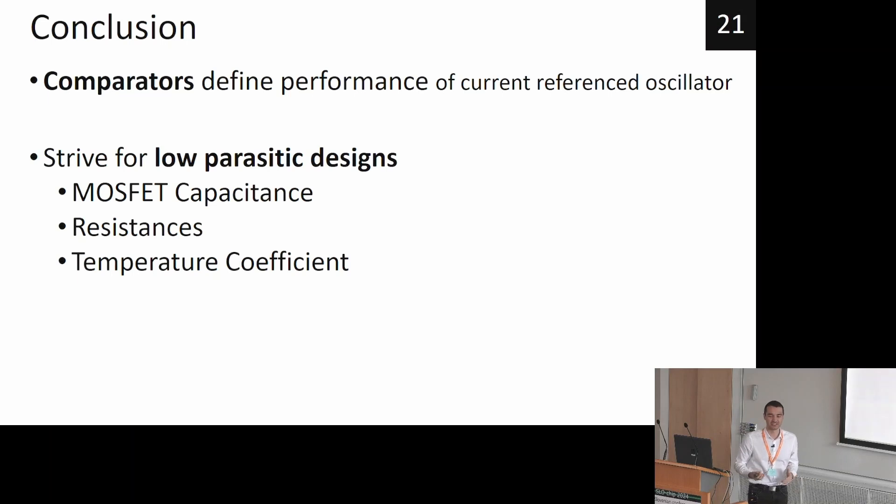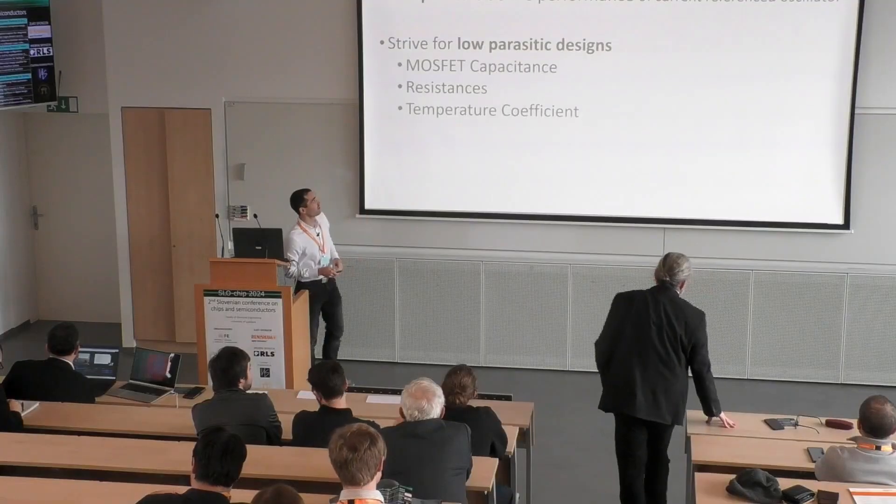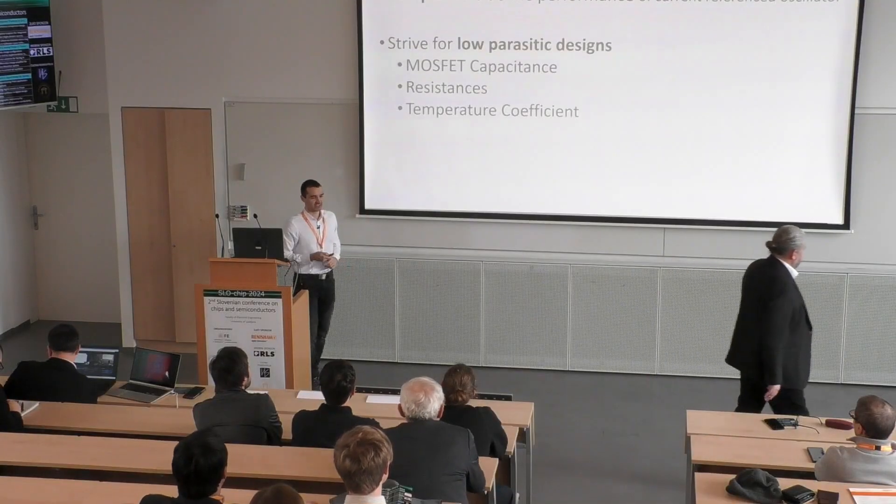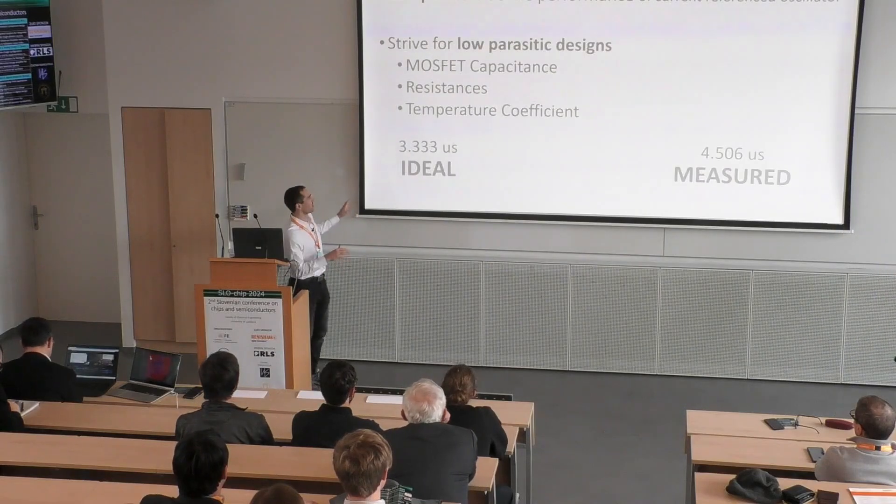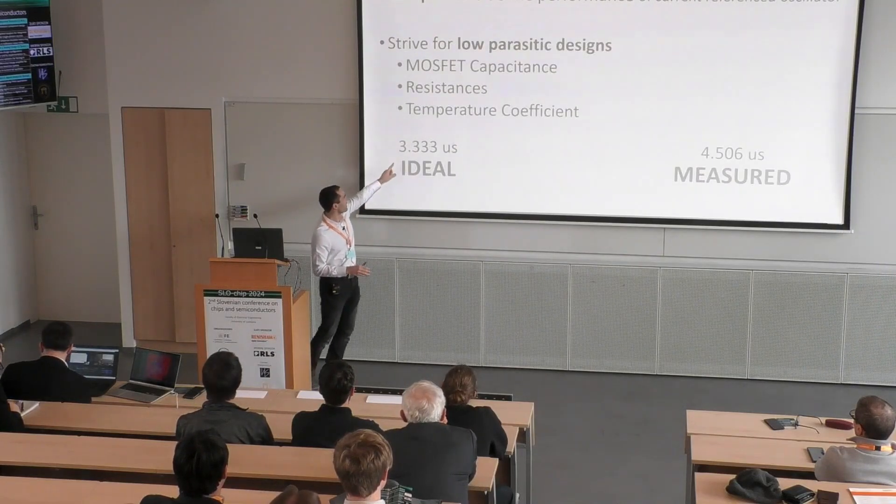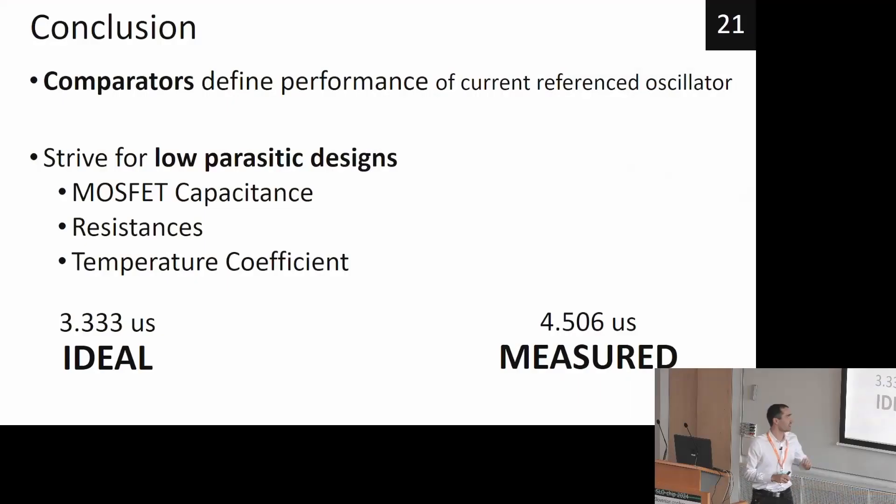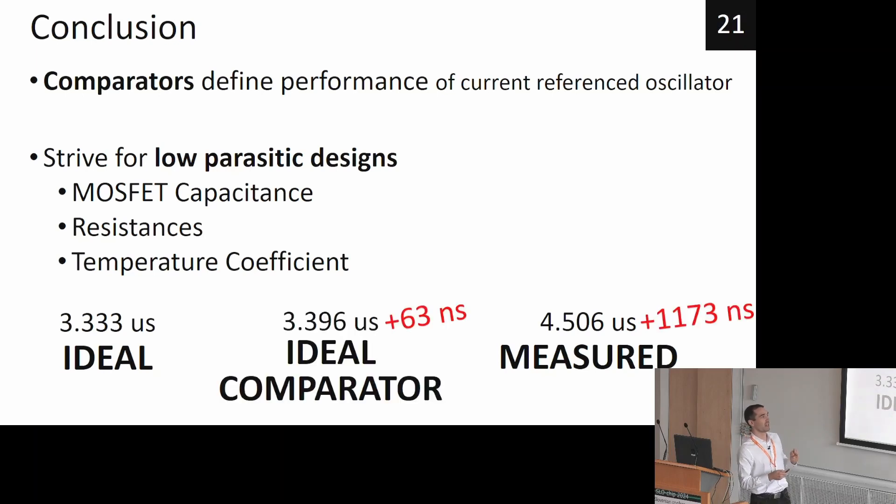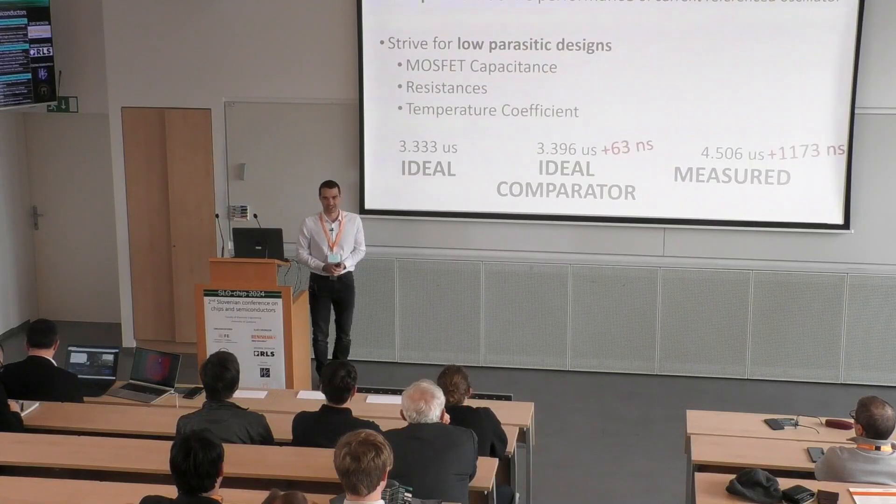And the comparators are the main elements defining the performance of current reference oscillator. And to conclude, just to see the ideal version has a period of 3.33 microseconds. The measured at four and a half. And now if we would use only ideal comparators, we would have an error of only 63 nanoseconds. With this I like to thank you for your attention.